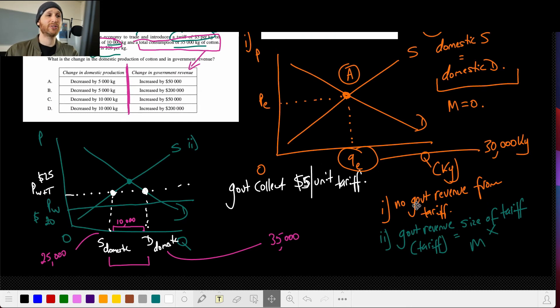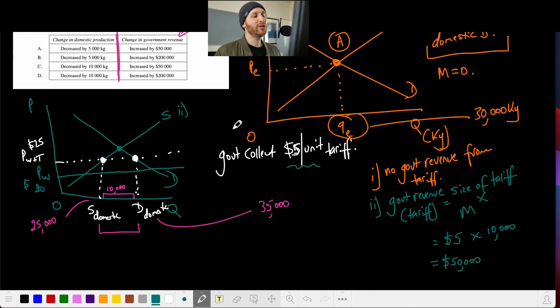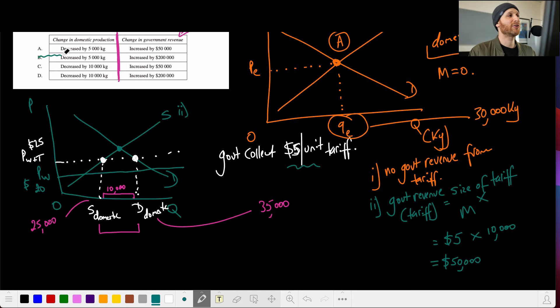So if I move this down just a little bit slightly here, I can say that I know that the size of the tariff is $5 per unit here, and that I know that the number of imports that are being sold is 10,000. So then I've got $50,000. So what's really good about finding that out is I can then cross off this one, and then I can cross off this one. And then that makes my life a lot easier because now I've got a 50-50.